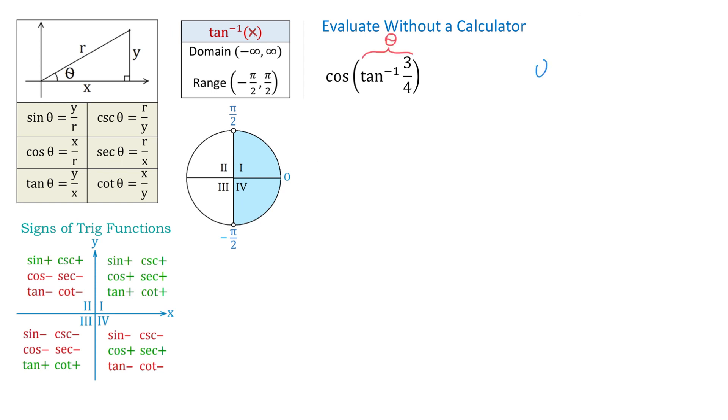We will write that theta equals inverse tangent of 3 over 4. From here, we can write that tangent of angle theta equals 3 over 4.